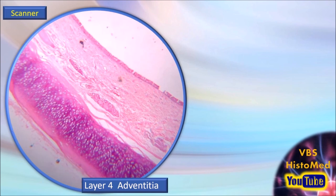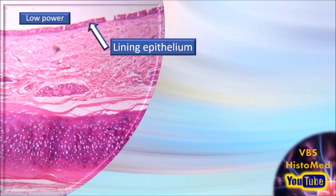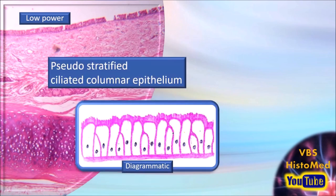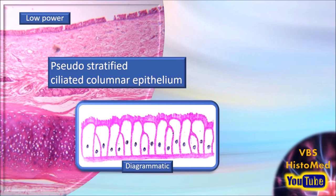In a little more detail now, the mucosa has two parts: a lining epithelium and a lamina propria. The lining epithelium is shown in another photograph using a special stain at a slightly higher magnification. It consists of pseudo-stratified ciliated columnar epithelium. There is also a diagrammatic representation shown below the photograph, showing how you draw it in histology using H&E pencils.